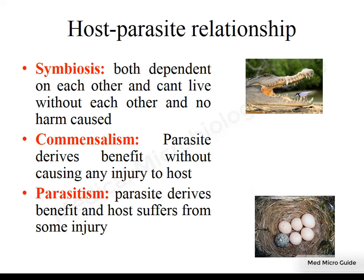There are three types of relationship between the host and parasite. A symbiotic relationship is one where both the parasite and the host are interdependent without causing any harm. Commensalism is one in which the parasite derives benefit without causing any injury to the host. The parasitic relationship is one in which the parasite derives benefit and the host suffers from injuries caused by the parasite.